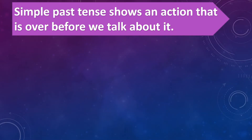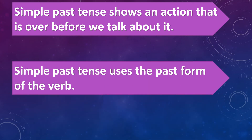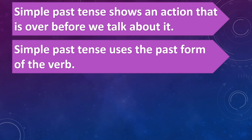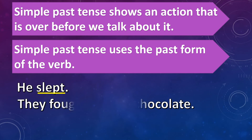Simple past tense. Simple past tense shows an action that is over before we talk about it. Simple past tense uses the past form of the verb. Example: 'He slept.' Slept is the past form.